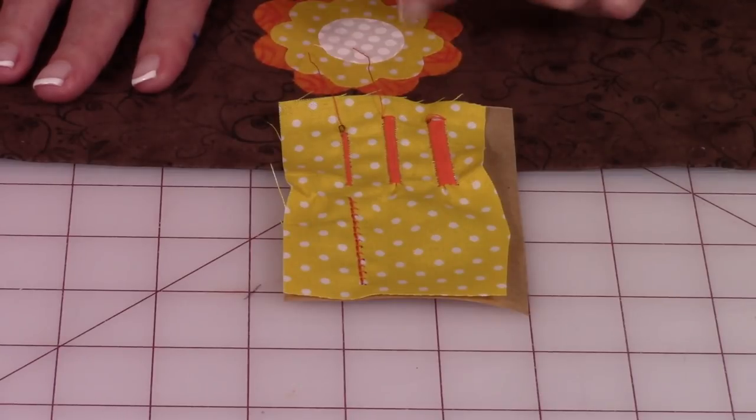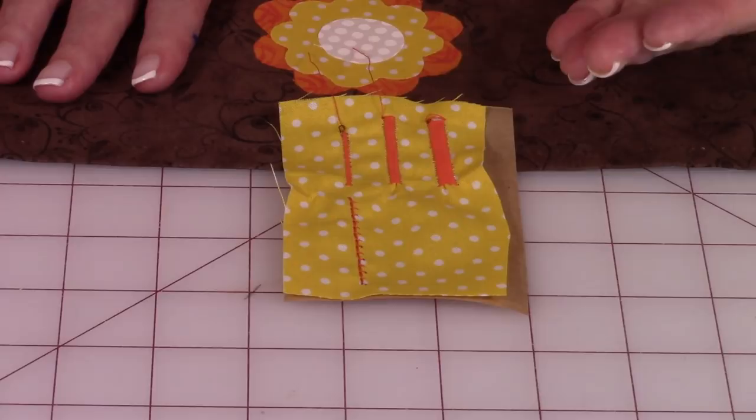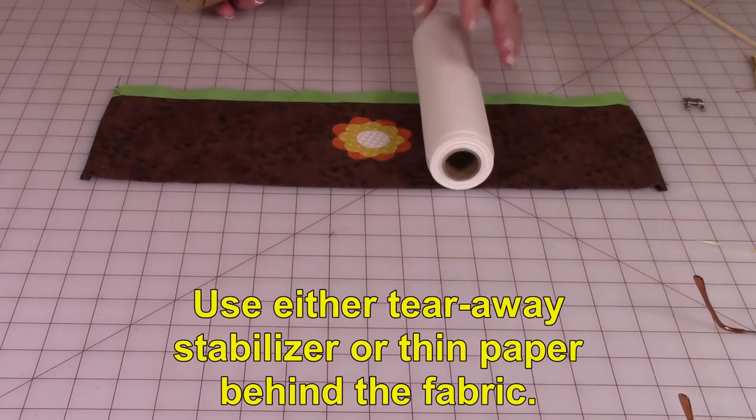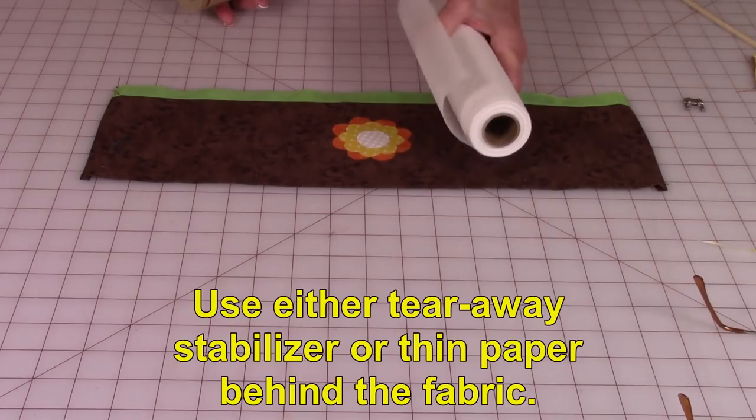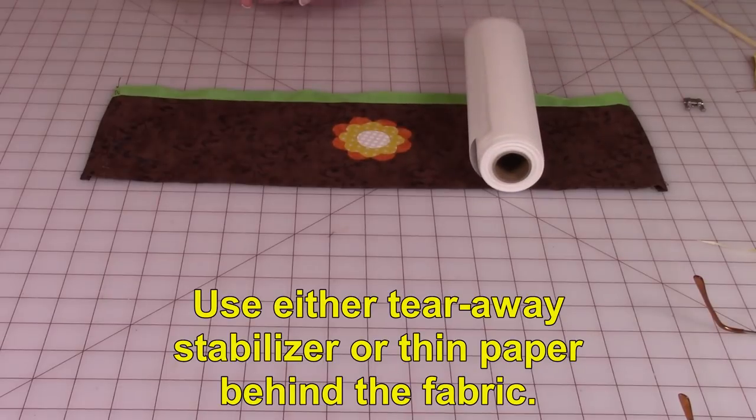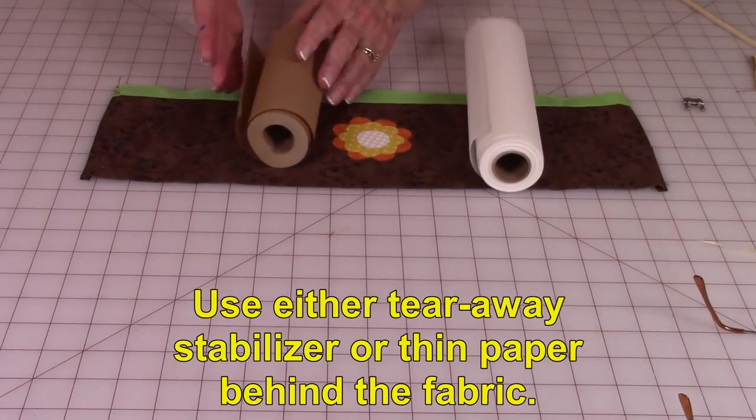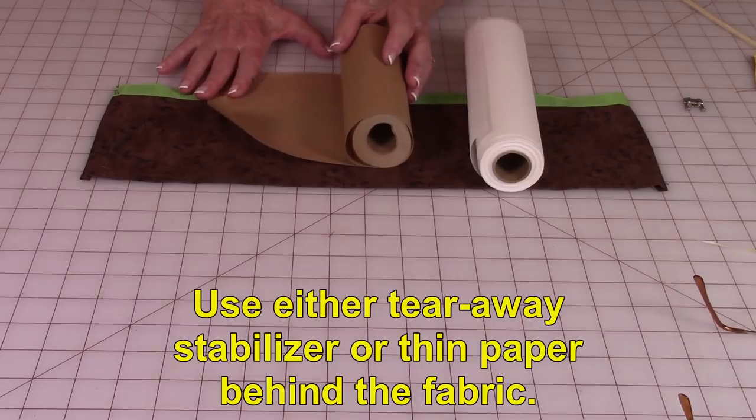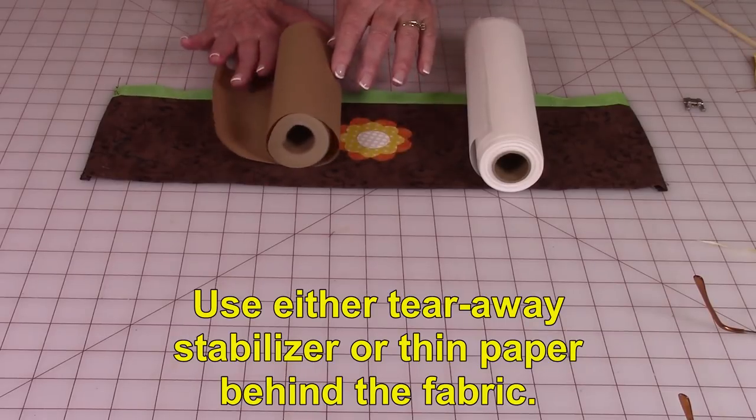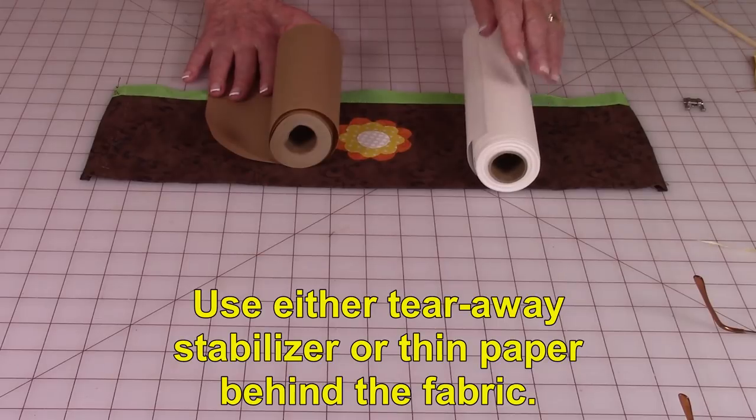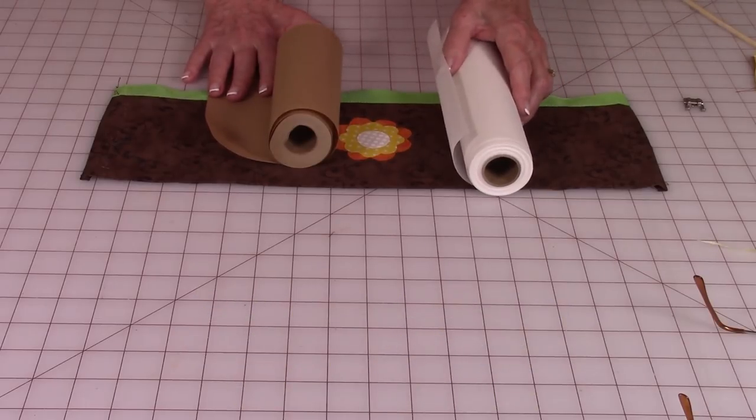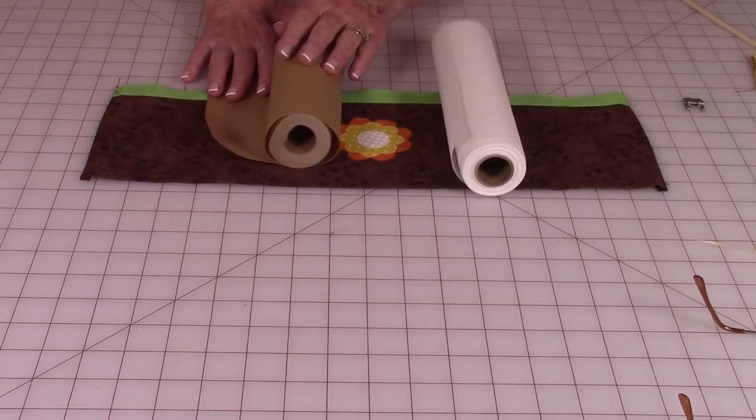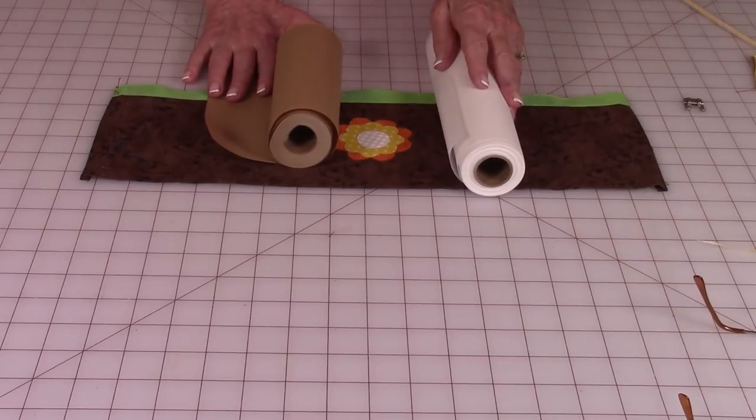And you're going to need one more thing you need to put behind the back. You need to either use machine stabilizer, which comes on rolls like this, or you can use this thin paper, which I got at Home Depot in the paint department. It's a lot cheaper than this, but sometimes I'll use both. I'll go back and forth. It just depends on what I'm doing. The paper still works as well as this.